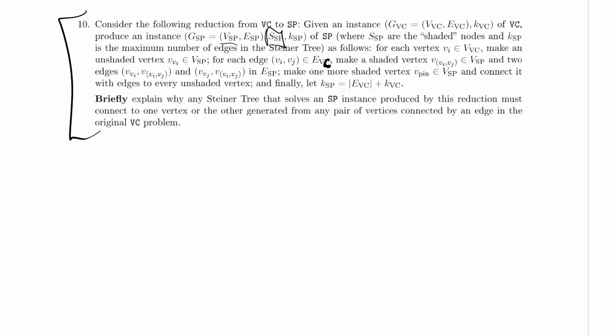that ought to be VC. Okay, so for each edge in the vertex cover problem, make a shaded vertex in the Steiner tree problem. So we're actually going to make vertices in the Steiner tree corresponding to edges in vertex cover, and then have two edges.